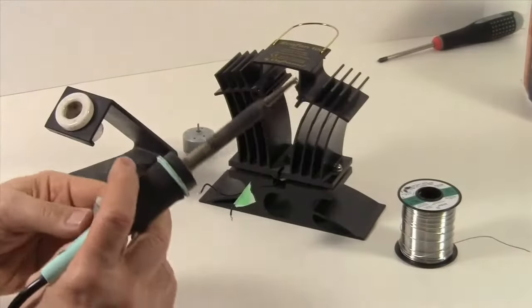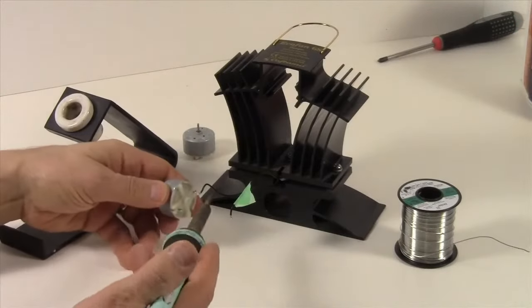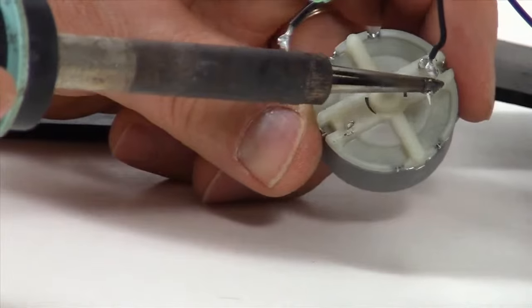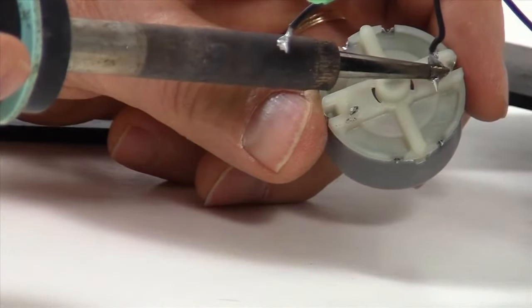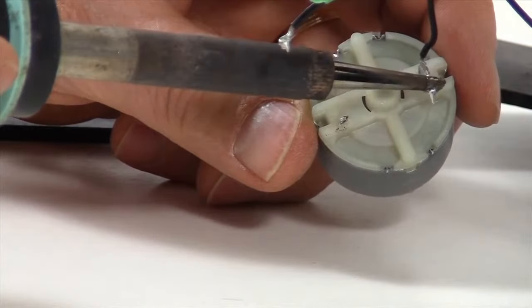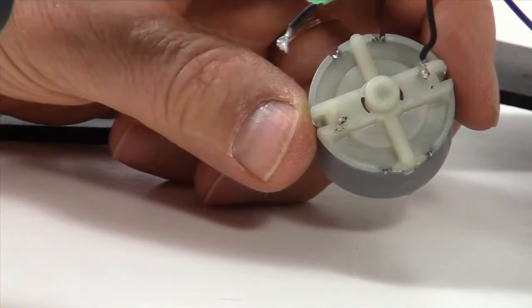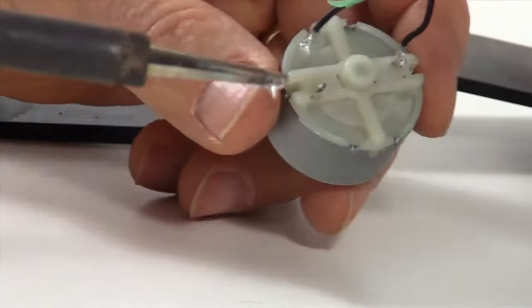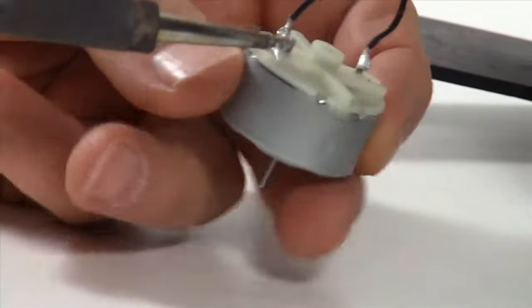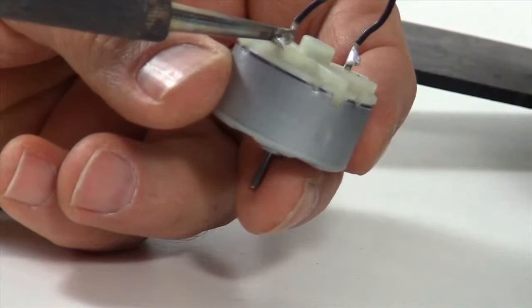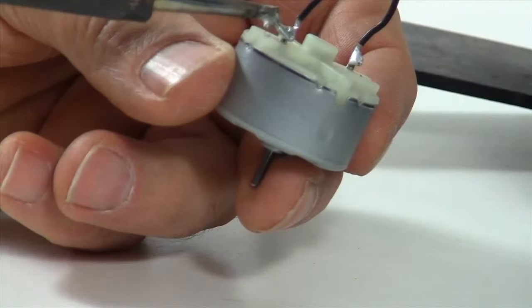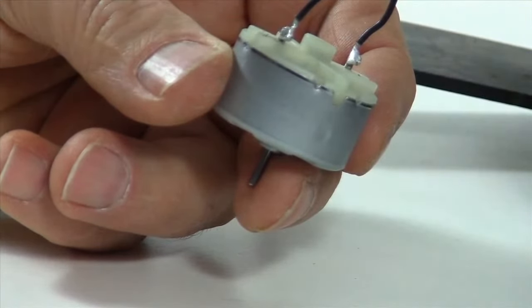Now we're ready to solder the wires onto the new motor. We're going to start with soldering the negative wire to the terminal. And once we've completed that one, now we're going to solder the one marked with the green tape to the positive side of the motor, which has the little indent on the plastic.